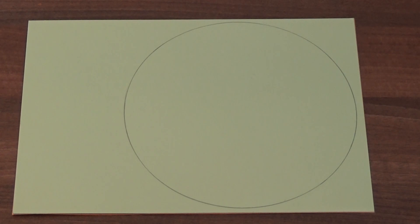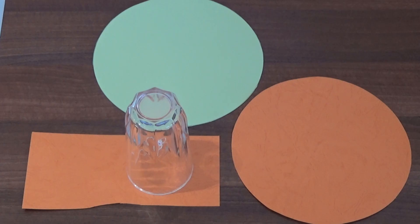So now I have a circle to cut around. I now have two larger circles and need to draw around the glass to make a smaller circle.